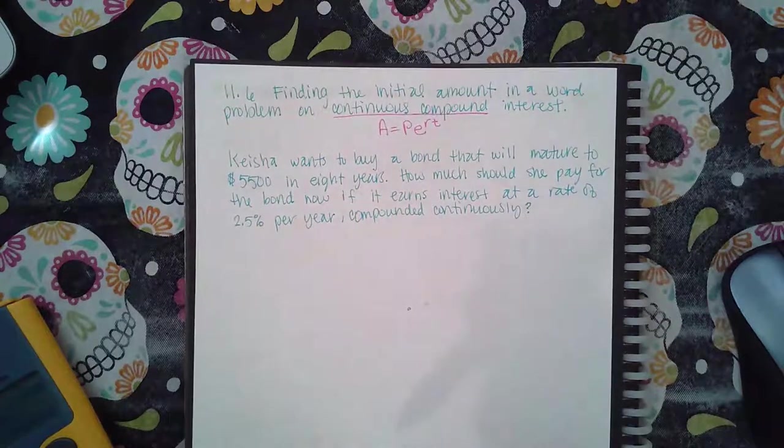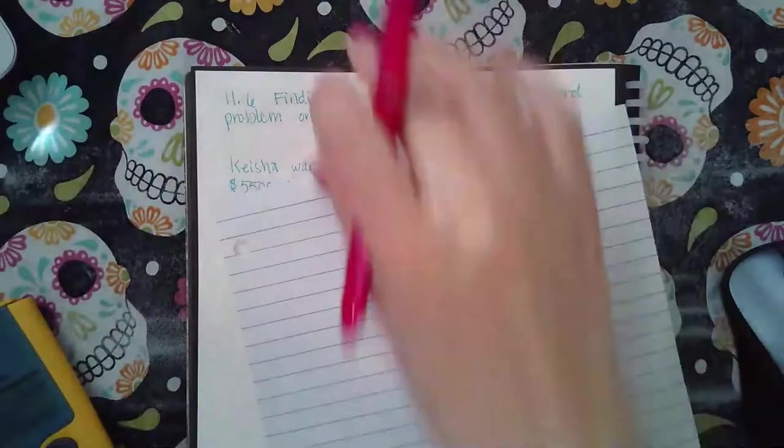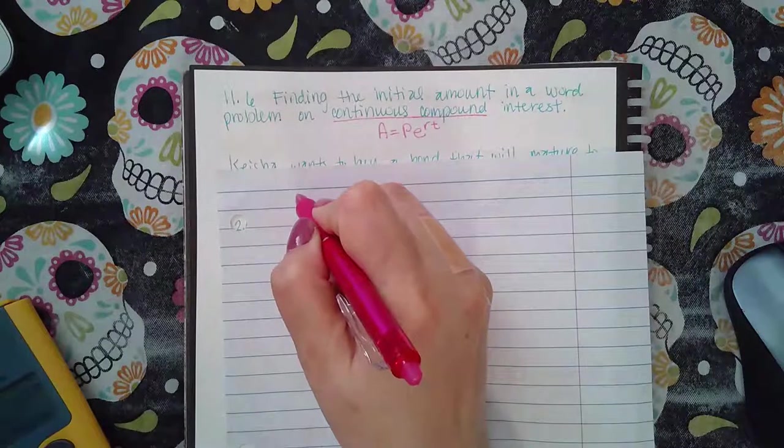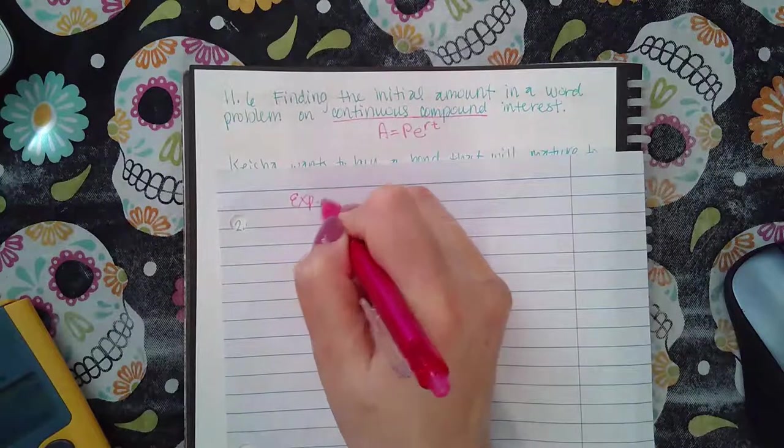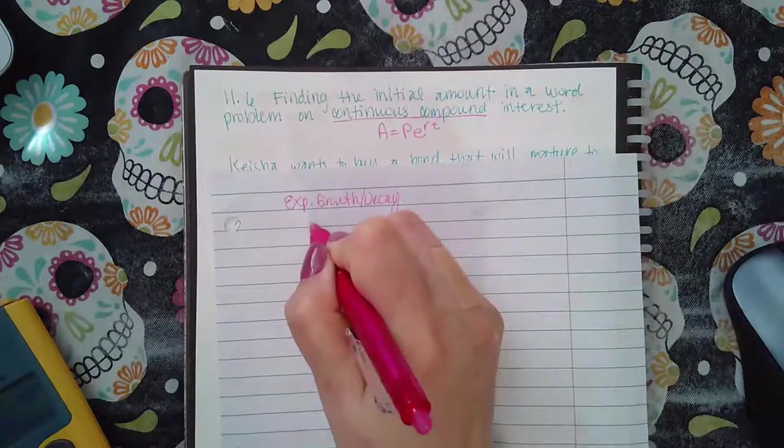So there's three different formulas, and all of them are used in three different cases. So let's just review that again. We've got three formulas. We've got exponential growth or decay, and that one's this.